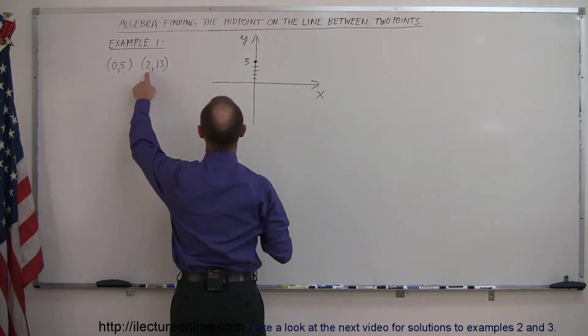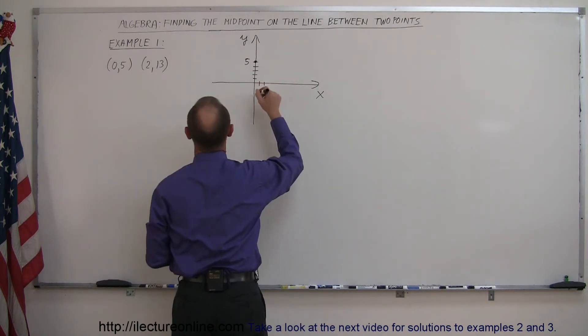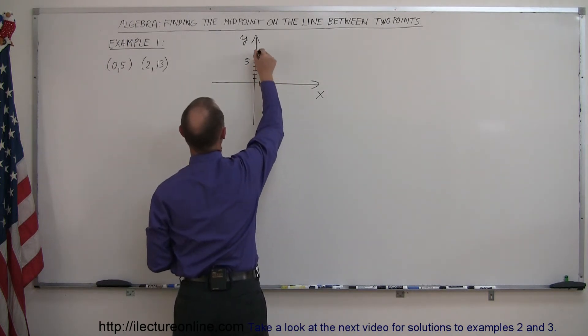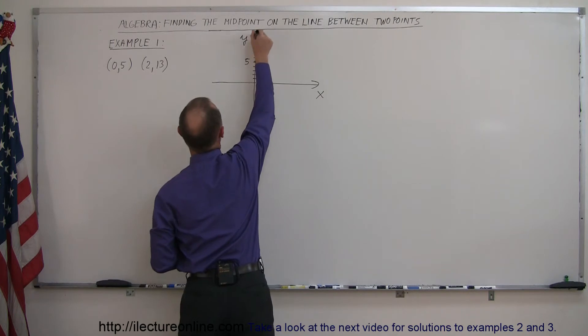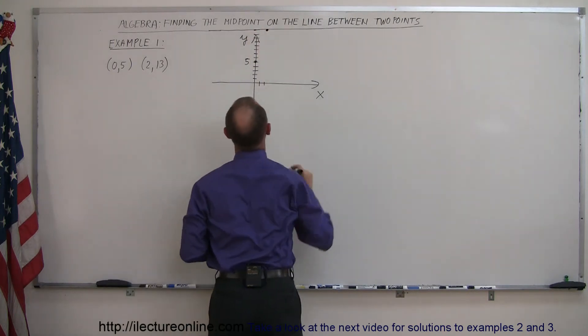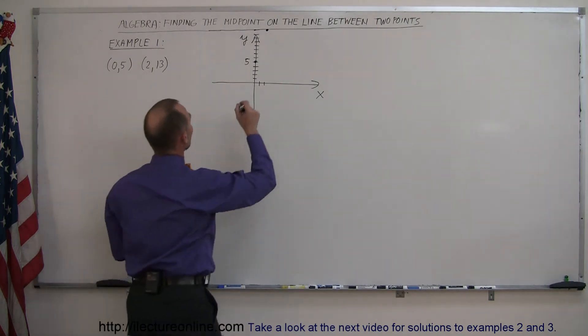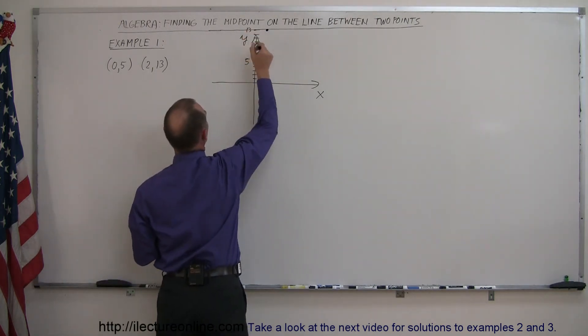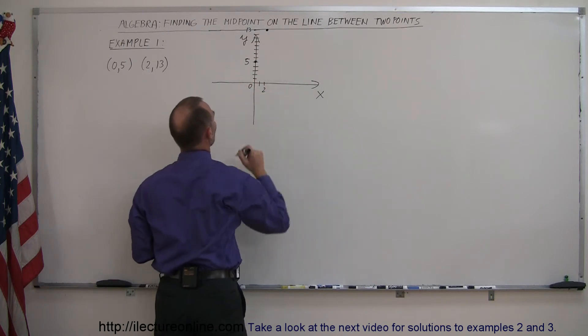Our second point is x equals 2, and y equals 13, that's 6, 7, 8, 9, 10, 11, 12, 13, and that would be right over there. Kind of running out of room, but that's okay, let's not worry too much about it. So the y value here is 13, the x value here is 2, there's the origin 0.